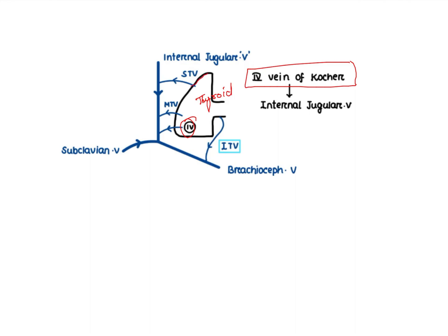The upper area of the thyroid gland is generally drained by the superior thyroid vein. The middle area is drained by the middle thyroid vein, and the lower area is drained by the inferior thyroid vein. Sometimes we also see the fourth vein, known as the fourth vein of Cochin.